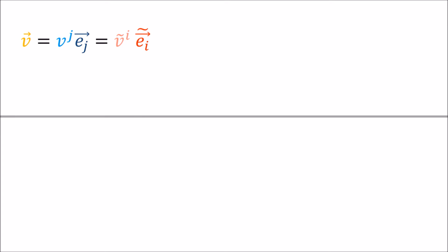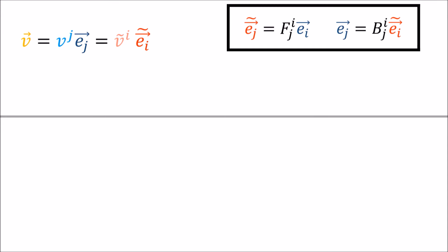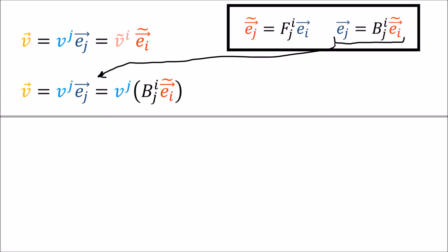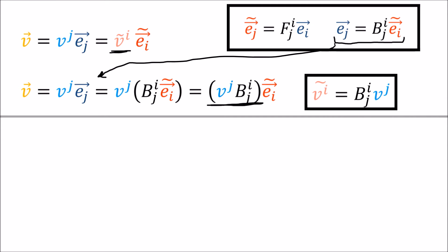Now in this video I'd like to talk about how the components of these vectors are contravariant. When we have an individual vector v, we can write it as a linear combination of the old basis or a linear combination of the new basis. The way we change between the old and new basis is by using the forward and backward transform coefficients given by f and b. If we expand the vector v in the old basis we can replace the old basis vectors with the new basis vectors using the backward transform b, and we're left with a linear combination of the new basis vectors. So the v-tilde components must be equal to the v components multiplied by the backward coefficients.